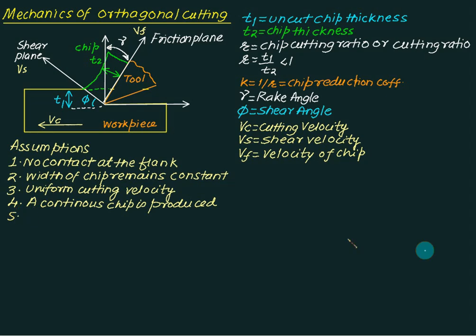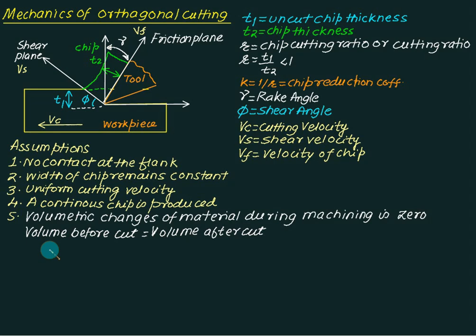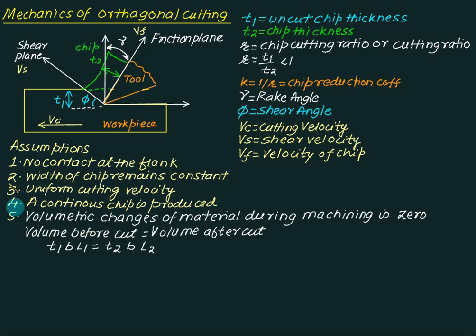The fifth assumption is that the volumetric change of the material during machining is zero. This implies that the volume before the cut equals the volume after the cut. So volume before the cut equals t1 multiplied by width multiplied by length l1, which equals t2 multiplied by width multiplied by chip length l2. Since width is constant due to assumption two, we get t1 by t2 equals l2 by l1, which equals r.